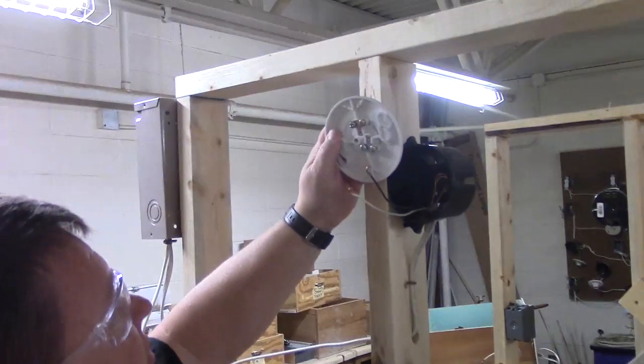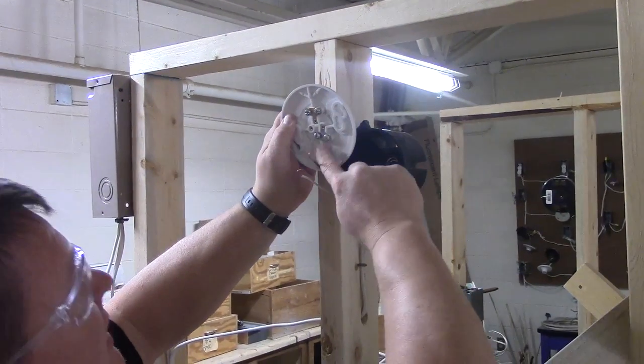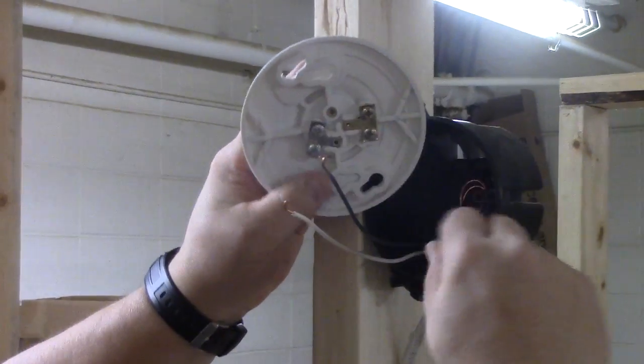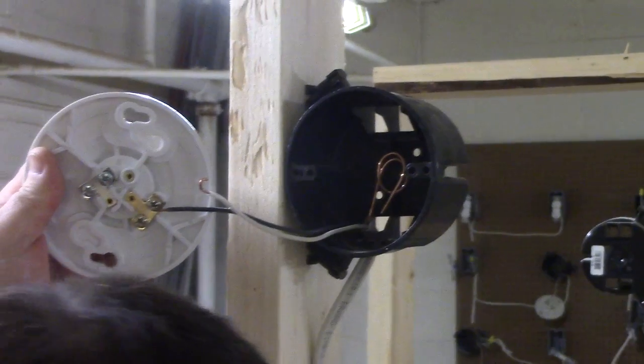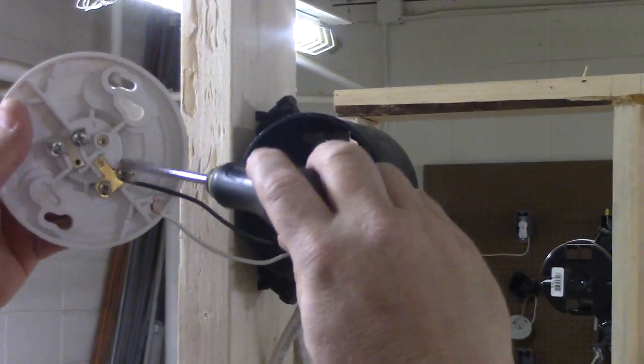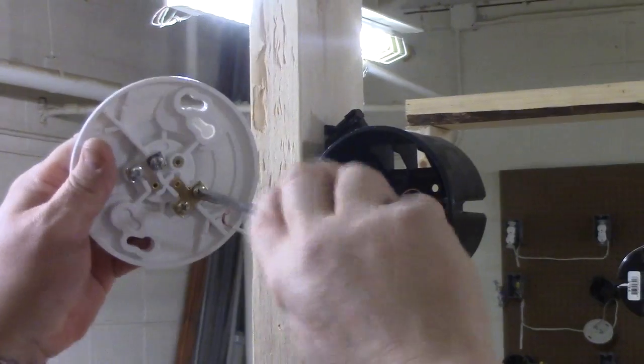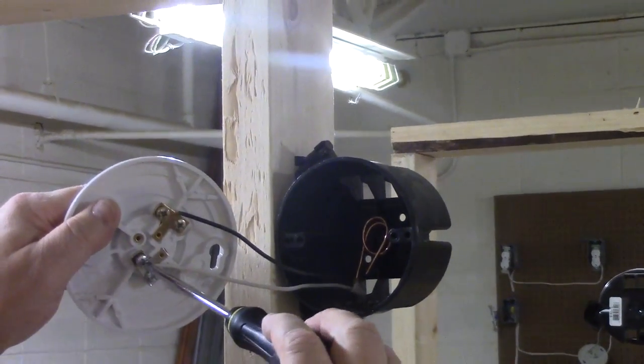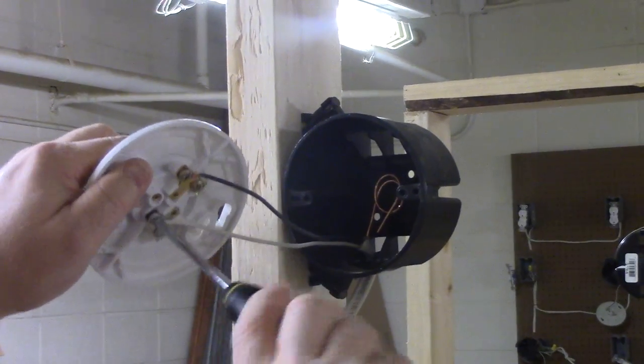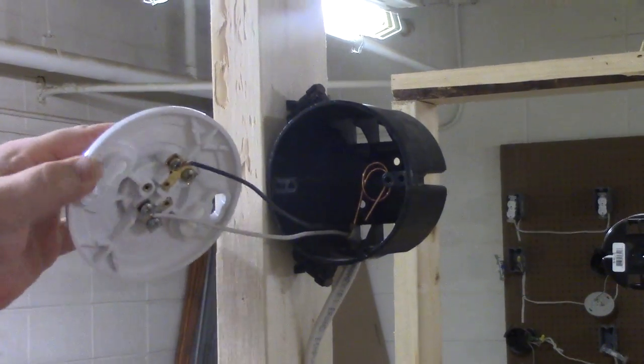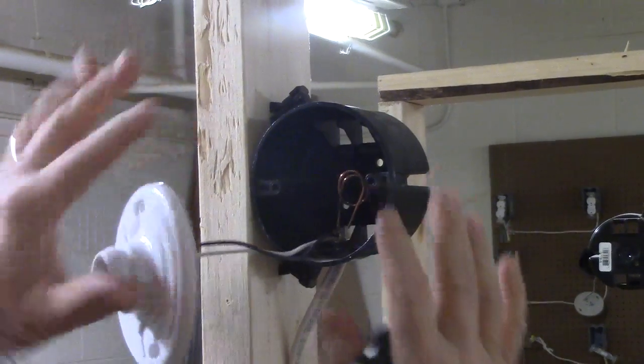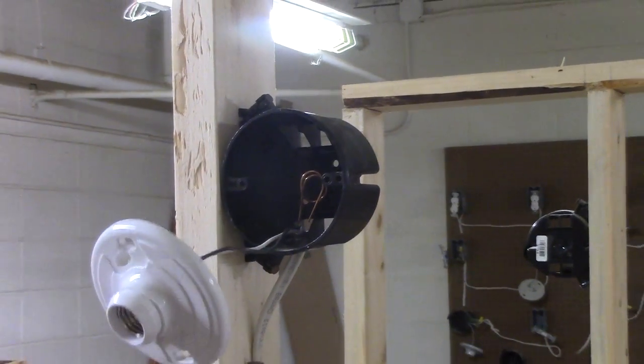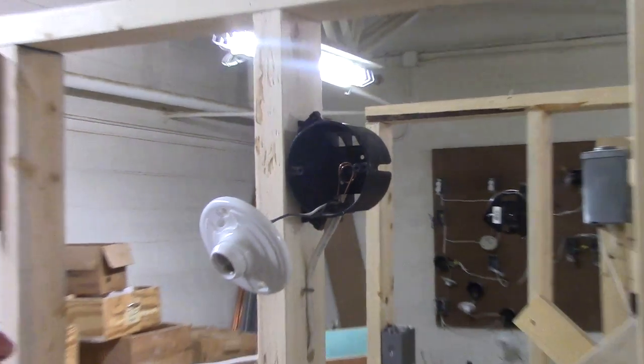Now an easy way to remember this is we have a gold section and a silver section. Our black is going to go to gold and our white is going to go to our silver screw. We want to make sure we are clockwise going on. Same way, turn it around, hook this one up clockwise. We're good there. This is all ready to go into the box and be put on. Put your screws on, mount it up, put your light bulb in it, and you're ready to go.